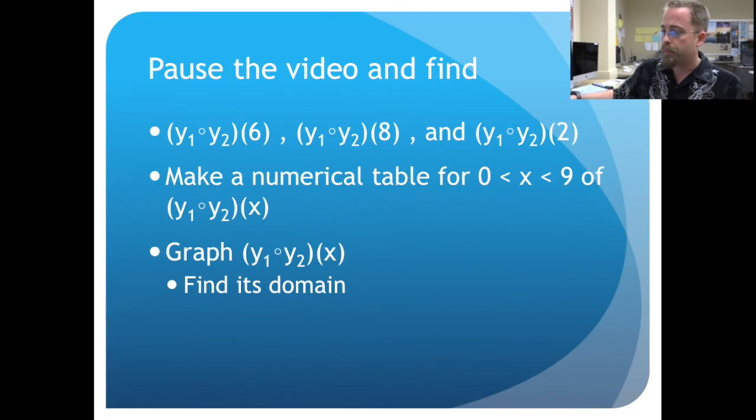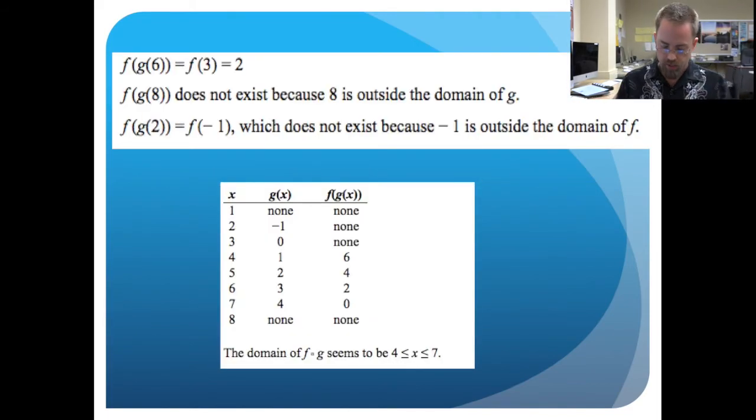Alright, we are back and here are the answers. If you take these functions and work your way inside, g of 6 is 3, f of 3 is 2. If you try to take g of 8, it doesn't exist, so you can't do that one. That was a trick question. The inside part doesn't produce an answer, so you have nothing to plug into the outside function. If you say g of 2, that's negative 1, f of negative 1, there we get stuck. That one doesn't exist because we're not allowed to plug that into f. Here's the table you can see and the spot that is allowable for everything seems to be restricted between 4 and 7.